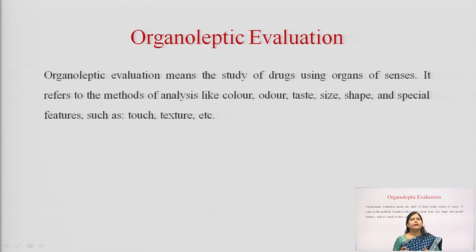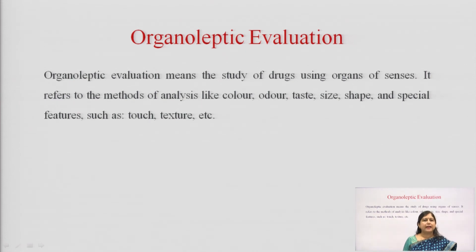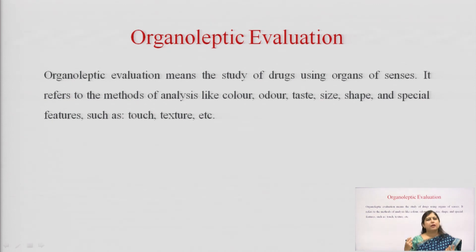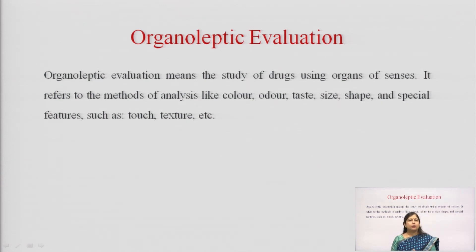Now we will move to the organoleptic evaluation of natural drugs. Natural drugs can be evaluated in different patterns, but the foremost type is when we look at the drug, try to identify it, and study its botanical features, colors, size, and shape. The name 'organoleptic' means when we are using our sense organs to study a particular drug. The main sense organs are our eyes, taste, smell, and touch — touching the drug, smelling the drug, tasting the drug, and looking at the drug. These are known as the organoleptic features.